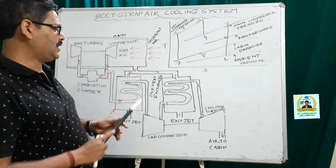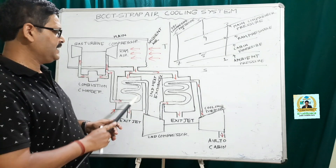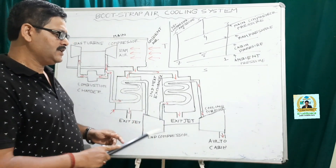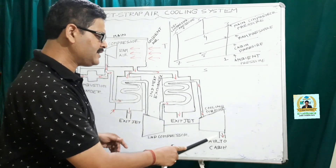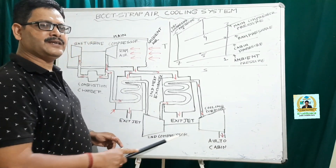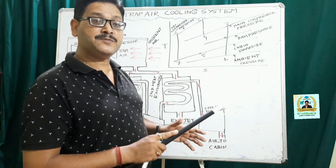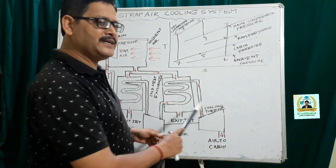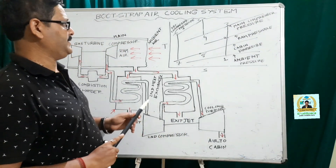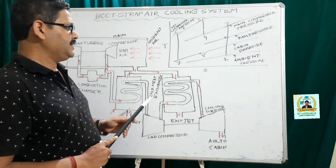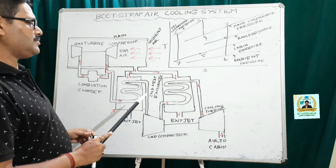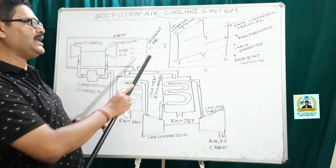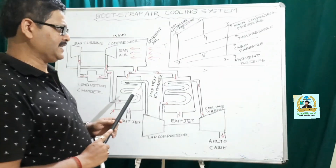The temperature of the air is significantly reduced on account of two phases of cooling taking place in two heat exchangers. So when it enters the cabin or cockpit, it receives heat from the space to be cooled, providing the desired refrigerating effect. Now we will discuss the entire system with the help of a T-S diagram.